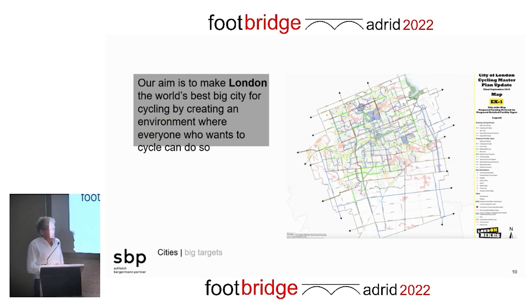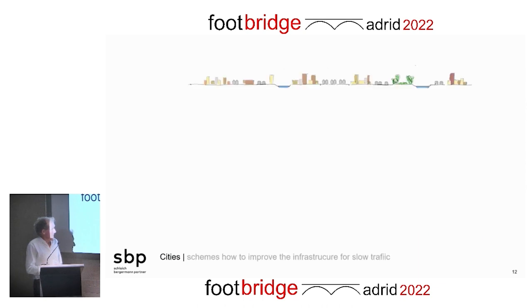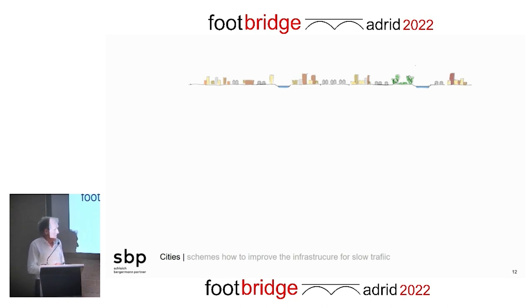There are big targets in cities — we have heard that Madrid also has big targets. They are postulating they will be the best in the world, whether it's London, Paris, or Madrid. This also means we have to improve infrastructure for cyclists and pedestrians, build new footpaths, new cycling paths, and overcome different obstacles.